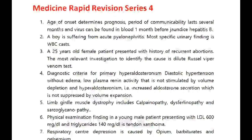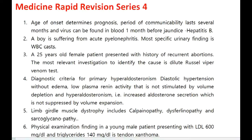Medicine rapid vision series 4. Age of onset determines prognosis. Period of communicability lasts several months, and virus can be found in blood one month before jaundice — this is hepatitis B.